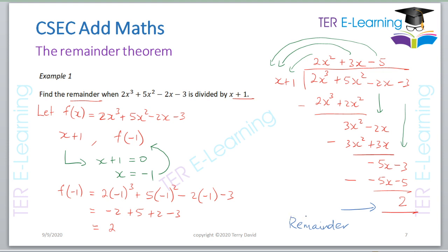These are two ways of working the same question. The substitution method is the shorter one — unless the question specifically asks you to do long division, you can just substitute the value and get the remainder directly. Both methods confirm the remainder is 2.